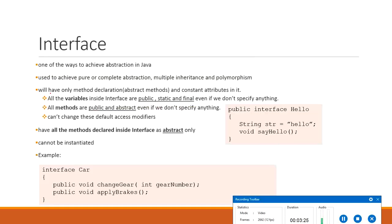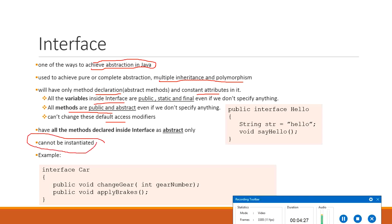All variables declared in an interface are implicitly public, static, and final — they are constants. All methods are public and abstract by default, even if you don't specify those keywords, and you cannot change these default access modifiers. Interface is one way of achieving abstraction — it achieves pure or complete abstraction and is a way of implementing multiple inheritance and polymorphism.